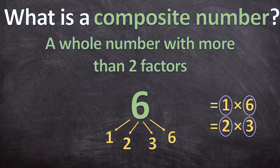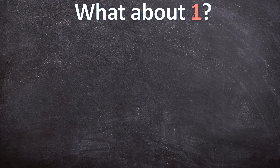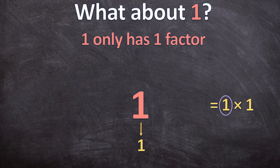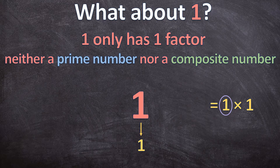But now there's another question — what about 1? What type of number is 1? Because a prime number has exactly 2 factors and a composite number has more than 2 factors. Let's see: 1 times 1 gives me 1, but there's nothing else. So 1 only has 1 factor, and that is 1. Because 1 only has 1 factor, it is neither a prime number nor a composite number.